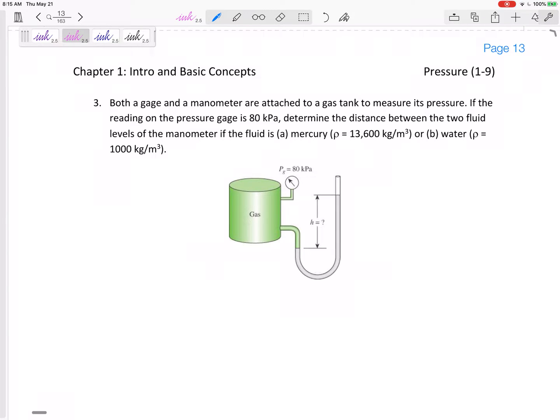If the pressure in the tank is 80 kPa, determine the distance h between the two fluid levels of the manometer if the fluid is mercury. And then we'll look at what if the fluid was water. Mercury has that density.